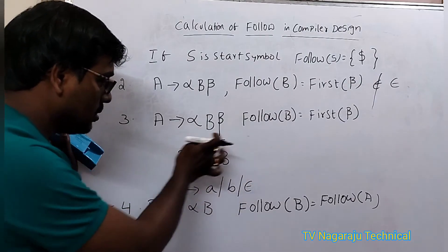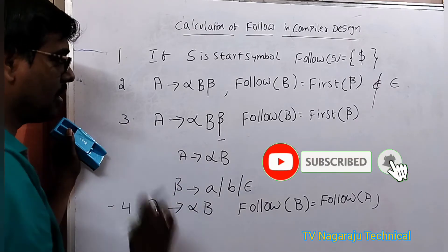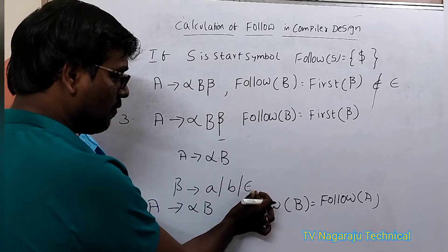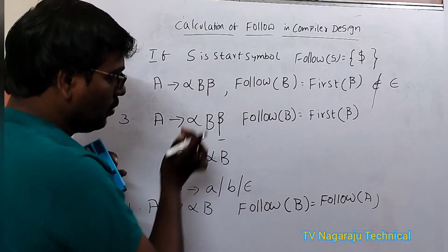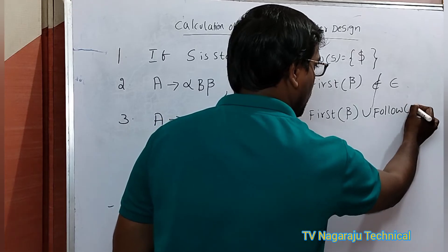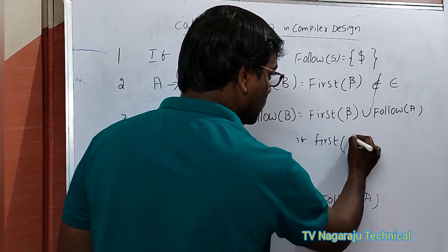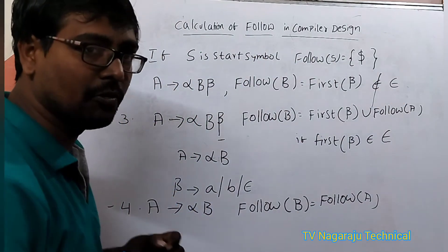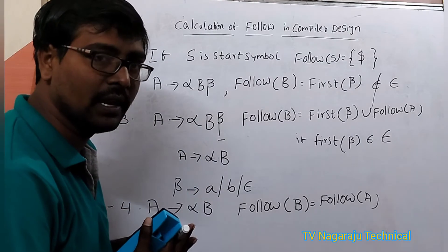So if no symbol is present after B, FOLLOW of B equals FOLLOW of A. For all terminals we write FIRST of beta minus epsilon, and whenever epsilon occurs — that is, whenever epsilon is in FIRST of beta — FOLLOW of B includes FOLLOW of A as well. These are the rules to calculate FOLLOW.